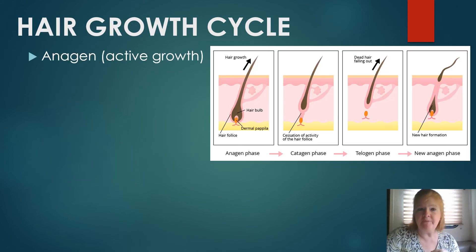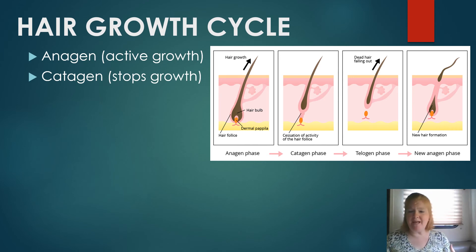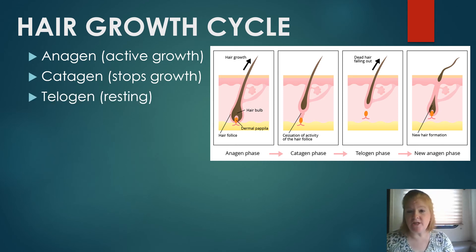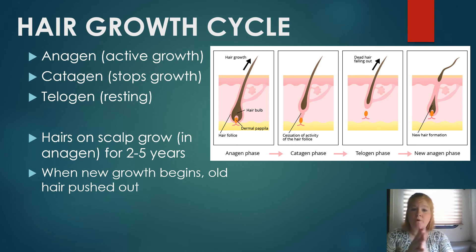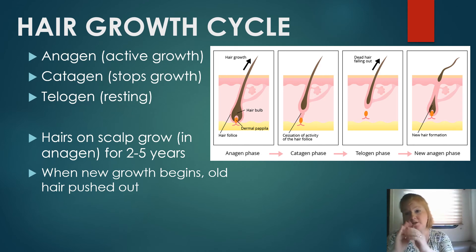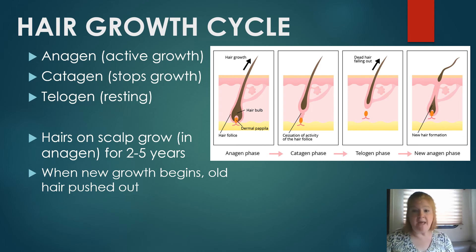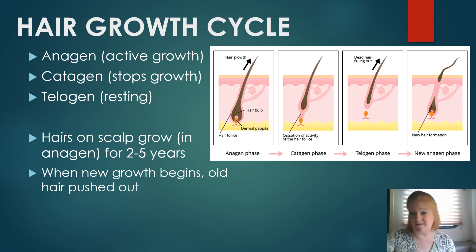The hair growth cycle has three stages: anagen — active growth, where the hair is actually dividing; catagen — the growth stops and the papilla starts to retract; and telogen — the resting stage. Think of it as ACT: anagen, catagen, telogen. Hair on your scalp grows in anagen for about two to five years. During telogen, the hair rests in place, and when the follicle switches back to anagen and starts growing again, it may push out the old hair — that's when we shed. Hair on other parts of your body does not grow as long, which is why arm hair doesn't reach the length of scalp hair.